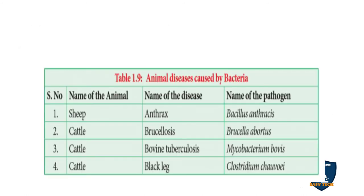Animal diseases caused by bacteria: sheep — anthrax by Bacillus anthracis; cattle — brucellosis by Brucella abortus; cattle — bovine tuberculosis by Mycobacterium bovis; cattle — black leg by Clostridium chauvoei.